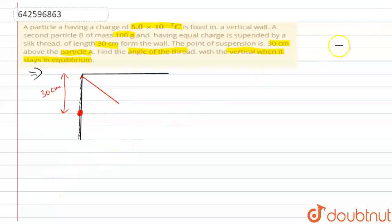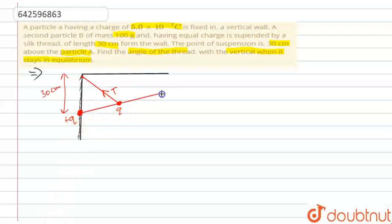This is a point charge, and this is also a point charge. There will be a tension acting here. Since both have charge +Q, the electric force Fe will be applied between them — acting outward. So the electric force Fe is applied here. One more force is acting: Mg downward. So Mg is acting downward here.